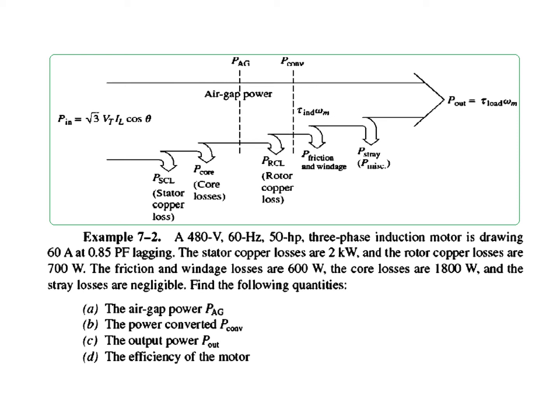With this background, we will solve example 7.2 from the book. The given parameters are: terminal voltage 480 V, frequency, motor power, current, power factor, stator copper loss, rotor copper loss, friction and windage loss, core loss, and stray losses are negligible. We need to find: air gap power, power converted, output power, and the efficiency of the motor.